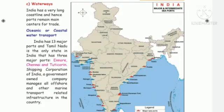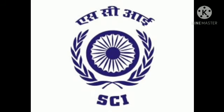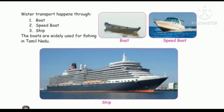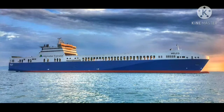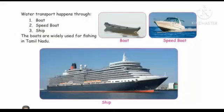The Shipping Corporation of India is a government-owned company that manages all offshore and marine transport related infrastructure in the country. Water transport happens through boats, speed boats and ships. Boats are widely used for fishing in Tamil Nadu. Ships travel between countries. See student page number 19 pictures: boat, speed boat, ship.